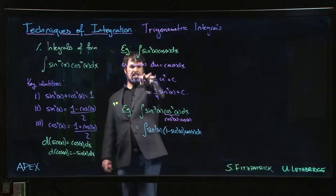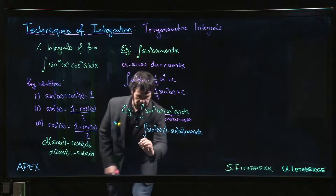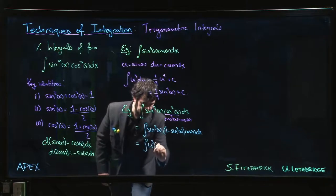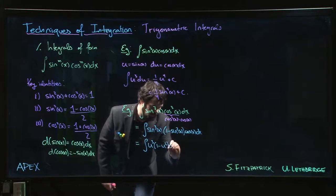And now I can make the same substitution that I made up there. And this becomes the integral of u cubed times 1 minus u squared du.